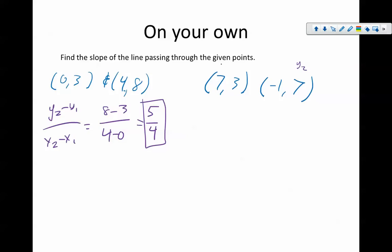My second one is going to be, again, Y2 minus Y1 over X2 minus X1. 7 minus 3 over negative 1 minus 7, which is going to be 4 over negative 8, but that reduces to negative 1 half.